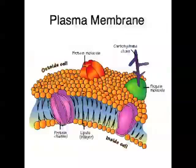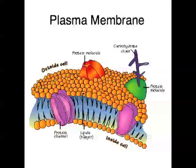Cells are surrounded by a plasma membrane, and the plasma membrane is composed of a phospholipid bilayer. Phospholipid is a type of fat, and bilayer means two layers, so the membrane is basically two layers of fat. In this layer, proteins and glycoproteins, or carbohydrate-protein molecules, protrude from it. This whole structure is known as the fluid-mosaic model, because it's fluid, but mosaic means there's a regular structure to the two layers of fat and the proteins poking out.